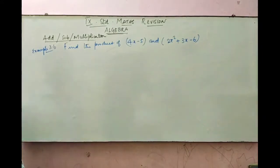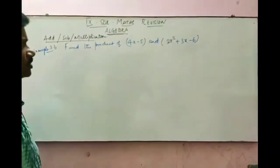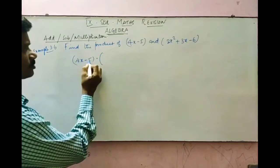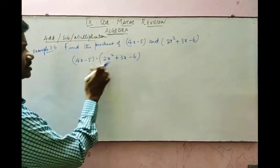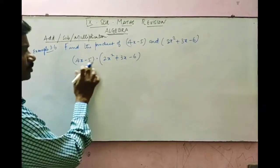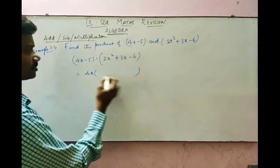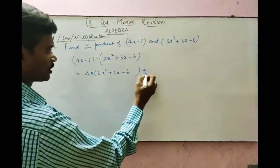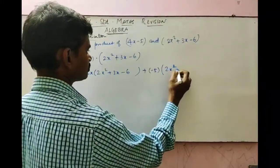Next, we are going to see example 3.6. In that, we have to find the product of two given polynomials: find the product of 4x minus 5 and 2x squared plus 3x minus 6. First, write it in multiplication form: (4x minus 5) into (2x squared plus 3x minus 6). Then you split this across two different terms — the first term 4x and the second term minus 5.